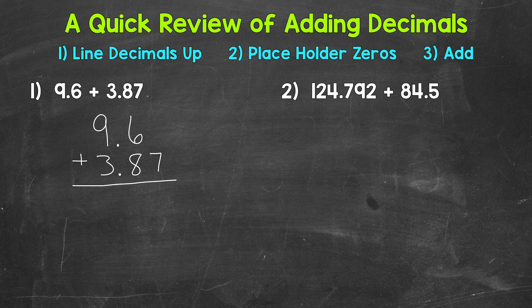Now the problem does look a little offset, because 9 and 6 tenths goes to the tenths place, and then 3 and 87 hundredths goes to the hundredths place. So what we can do here to make this look more lined up, we can use placeholder zeros. Remember, zeros to the right of a decimal do not change the value of that decimal. So we're going to be working with an equivalent decimal. We're not changing the value of the problem at all. So let's put a zero here in the hundredths place, and now both of our numbers go to the hundredths, and we're able to add.